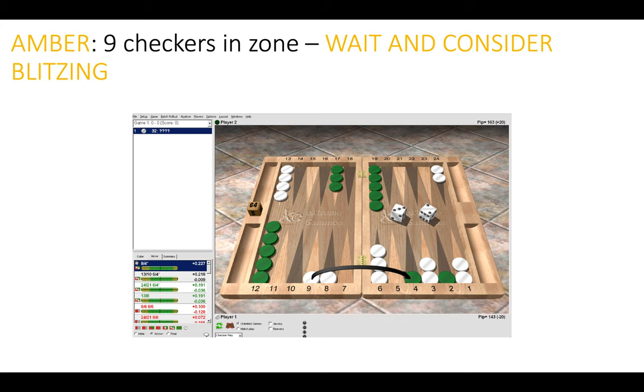If we now look at nine checkers in the zone, we enter the amber category of the traffic light system, and here we should wait to consider whether blitzing is a good option or not. So here it is correct to make the hit, but not hitting is only a 0.036 error, so if you were to play safely it wouldn't be a huge mistake in this scenario.